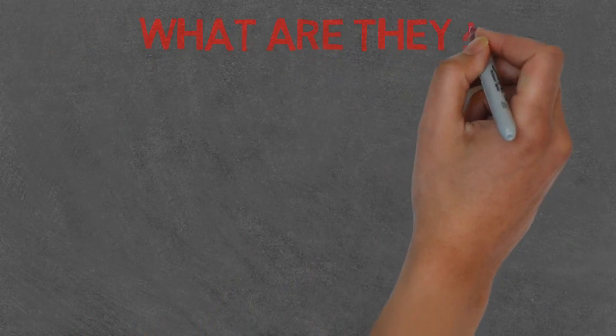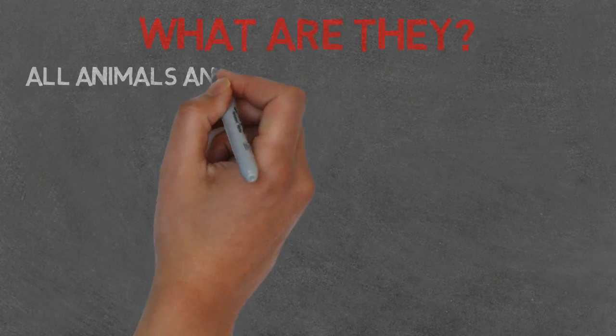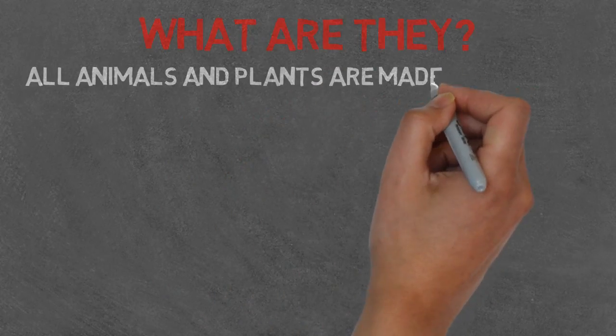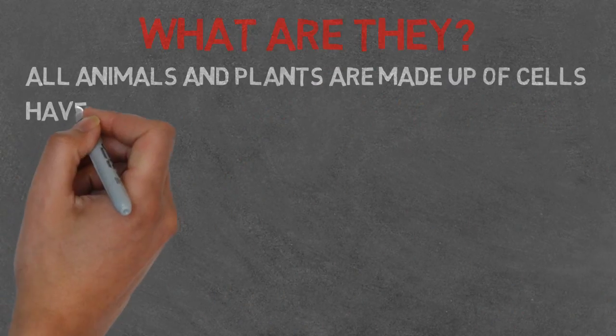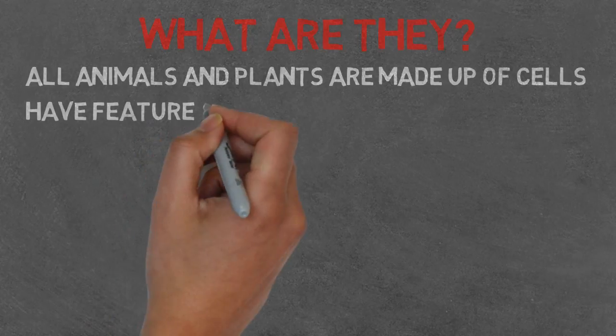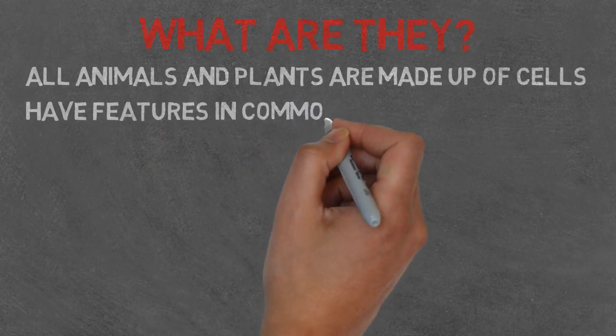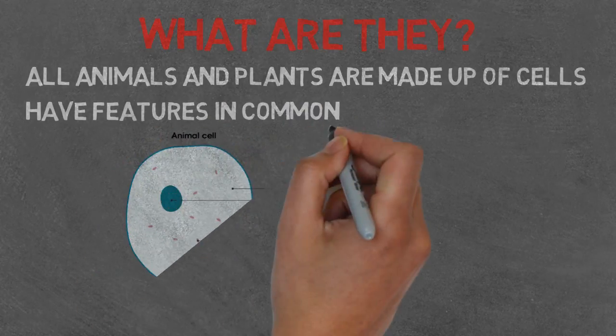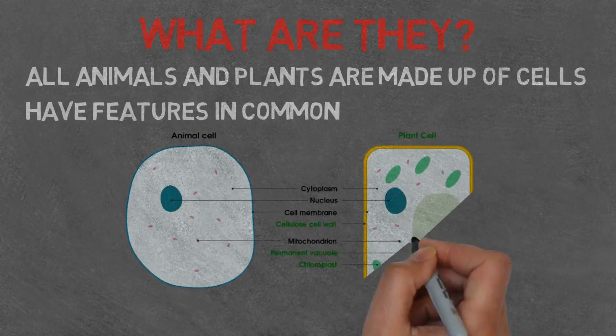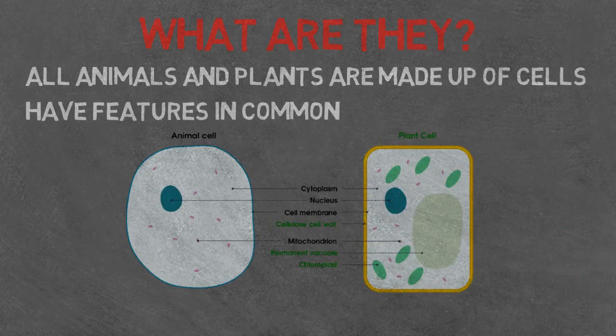So let's look at what they are first. All animals and plants are made up of cells and both have similar features that are in common. Both vary in size and shape. However, plant cells have a more rigid structure due to their cell wall which can limit their shape.